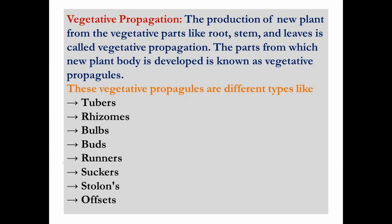As we already discussed in the fifth chapter of the 11th standard in the morphology of flowering plants, the parts which help to develop the new plant body are known as vegetative propagules. Different vegetative parts in different plants help in vegetative propagation and are recognized by different names: tubers, rhizomes, bulbs, buds, runners, suckers, stolons, and offsets. Please remember all these terms — they are very important for your examination.